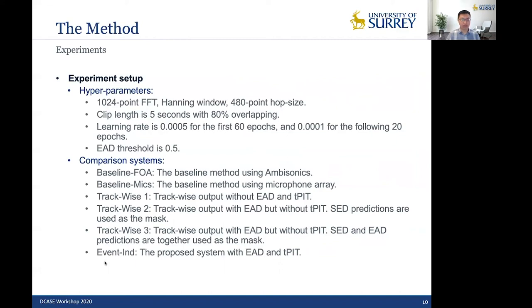And then we have trackwise 1 to 3. The difference is that trackwise 1 only uses the trackwise output, but without EAD and TPIT. But for trackwise 2, we use EAD but without TPIT. And we use SED predictions as a mask. And for trackwise 3, we use EAD still, there is no TPIT. And we use SED and EAD intersections as a mask. And lastly, for our proposed event int network, we use EAD and TPIT together.